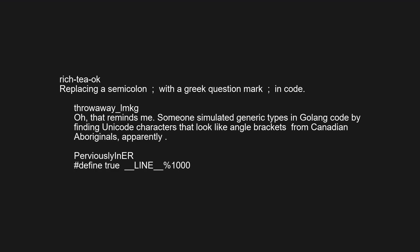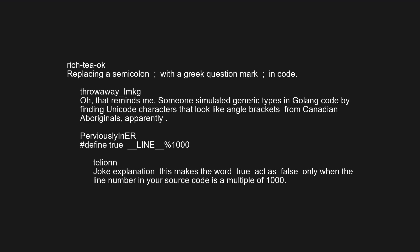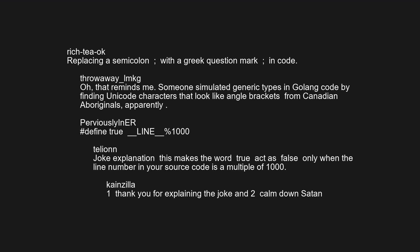'#define true (__LINE__ % 1000)' — joke explanation: this makes the word 'true' act as false only when the line number in your source code is a multiple of 1000. One: thank you for explaining the joke, and two: calm down, Satan.